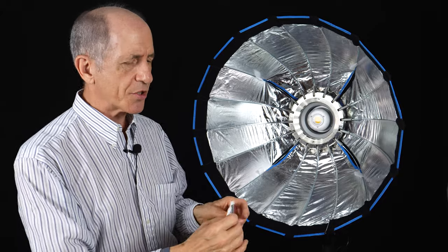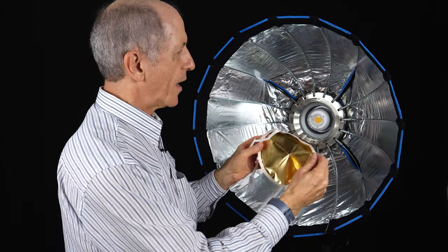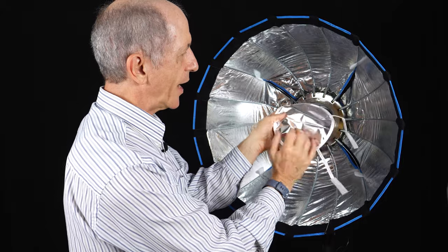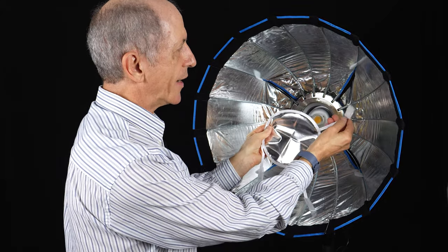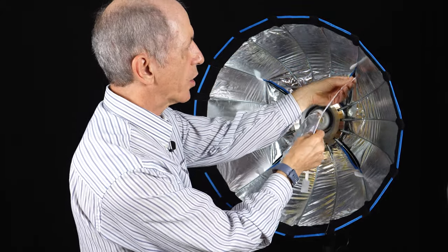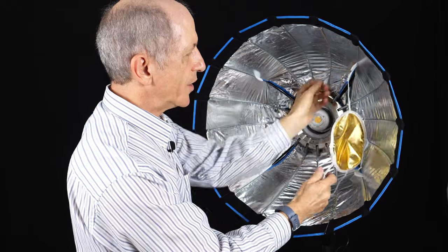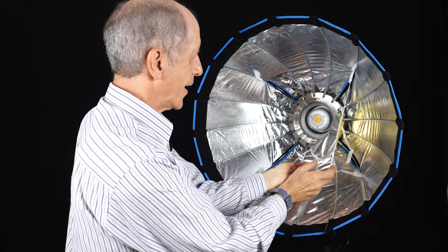Also, you have this occlusion disc that mounts in the middle, and it's got an amber side and a silver side. Now, it attaches to these hook and loop tabs inside the scoop frame, like this.